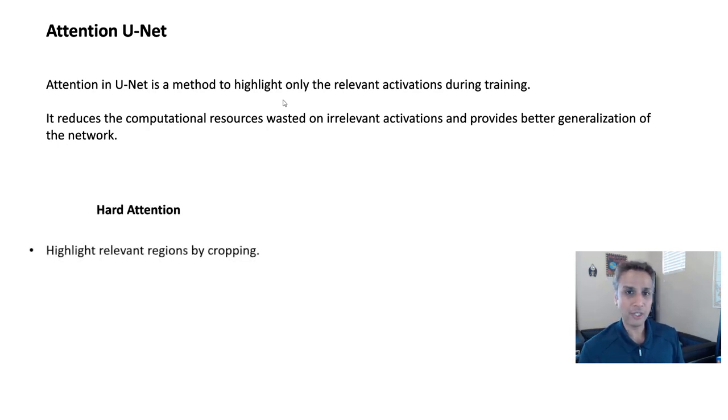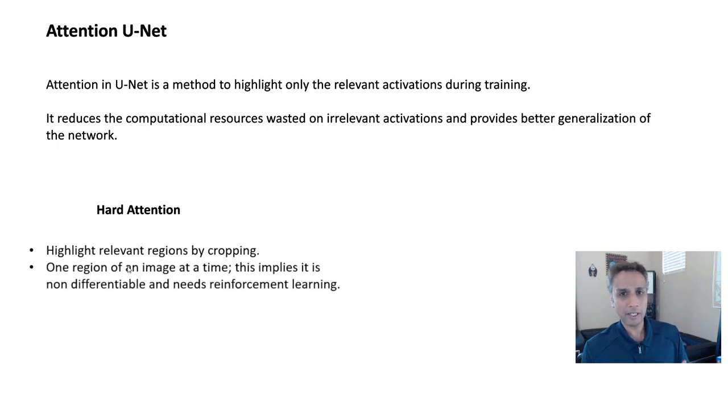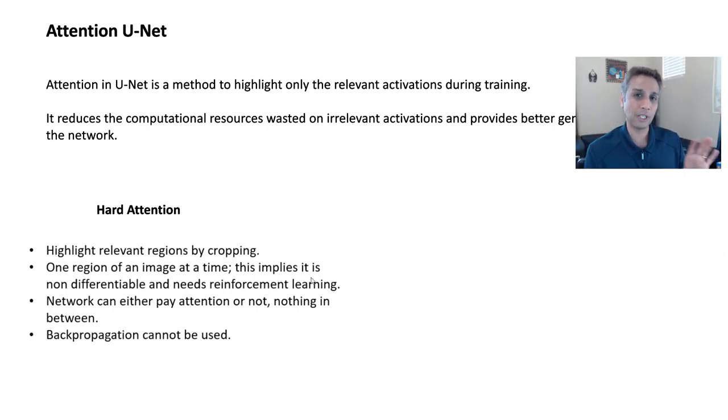So there are two types of attention. One is hard attention, and the other one is soft attention. Let's quickly cover hard attention. This refers to highlighting relevant regions by cropping, meaning if you see mitochondria, just crop that area. So just crop these areas and then use those areas. This is what they refer to by hard attention. And as part of hard definition, they're using one region of an image at a time, meaning you're cropping them. You're not looking at this entire region and then going through a convolutional network. You're only looking at a small patch in that specific image. So that means this is definitely not differentiable. You're just cropping. Cropping is not a differentiable operation, and you need some other type of learning if you would really want to do hard attention. And network in this example can either pay attention because you have a cropped image, or it doesn't pay attention because you don't have any regions of interest. So nothing in between. So backpropagation cannot be used when it comes to hard attention. That's a different discussion, so let's not focus on hard attention.